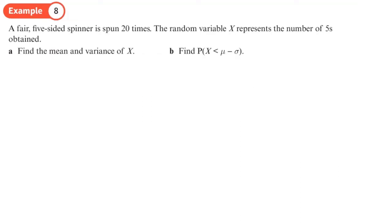A fair five-sided spinner is spun 20 times. The random variable X represents the number of fives obtained. Part A, find the mean and variance of X. Well, what type of distribution is this? It's a binomial distribution because we have a fixed number of trials and the probability of success obtaining a 5 is 1 fifth. So then the mean of this distribution is n times p. So that's going to be 20 times a fifth, which is 4. So there's my mean, E(X).